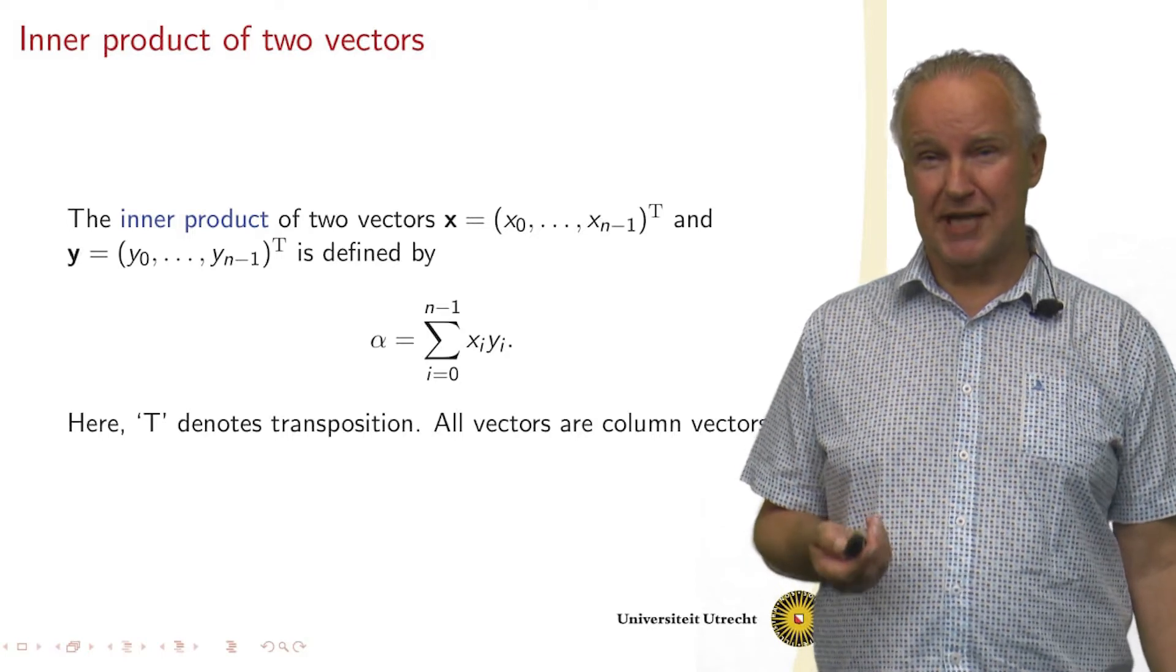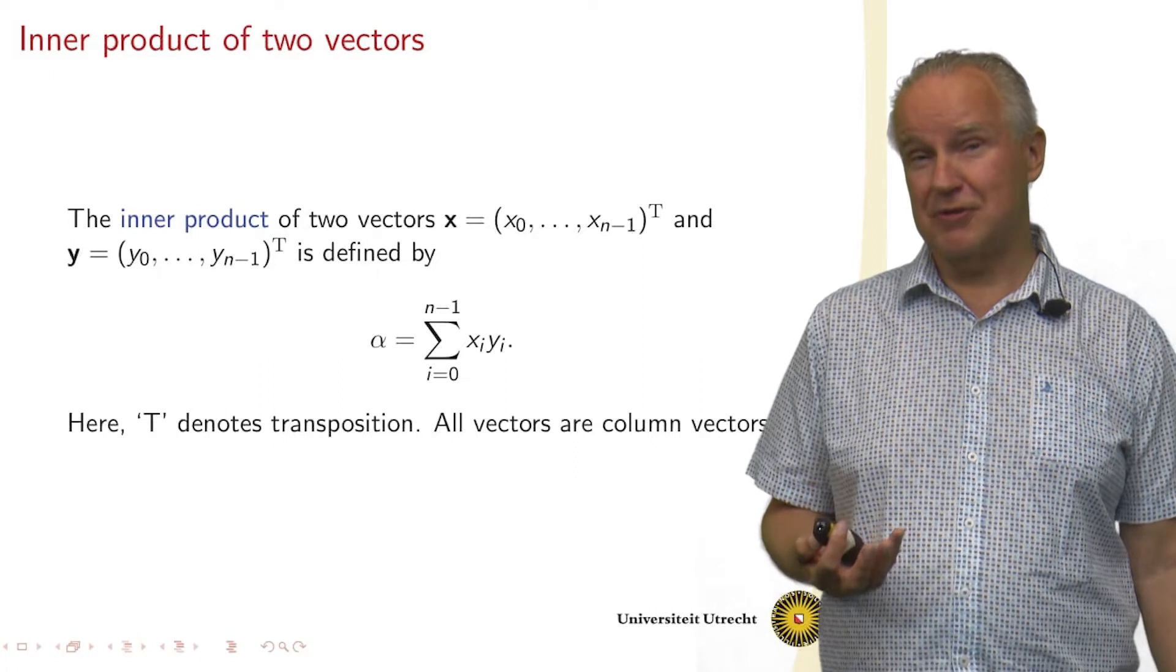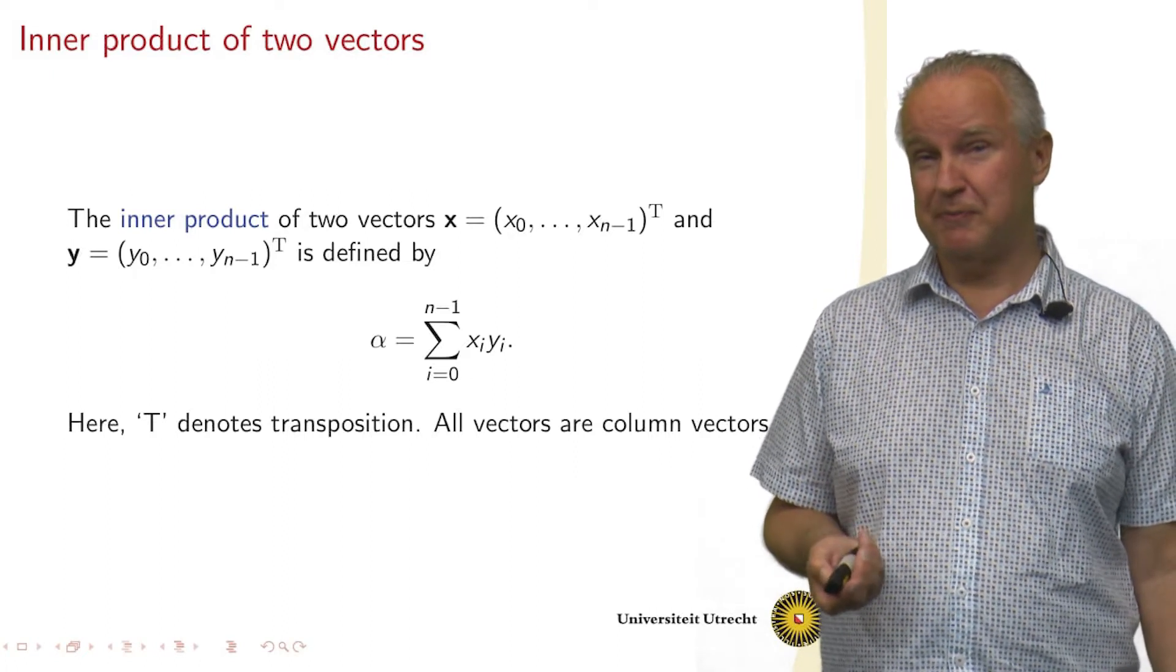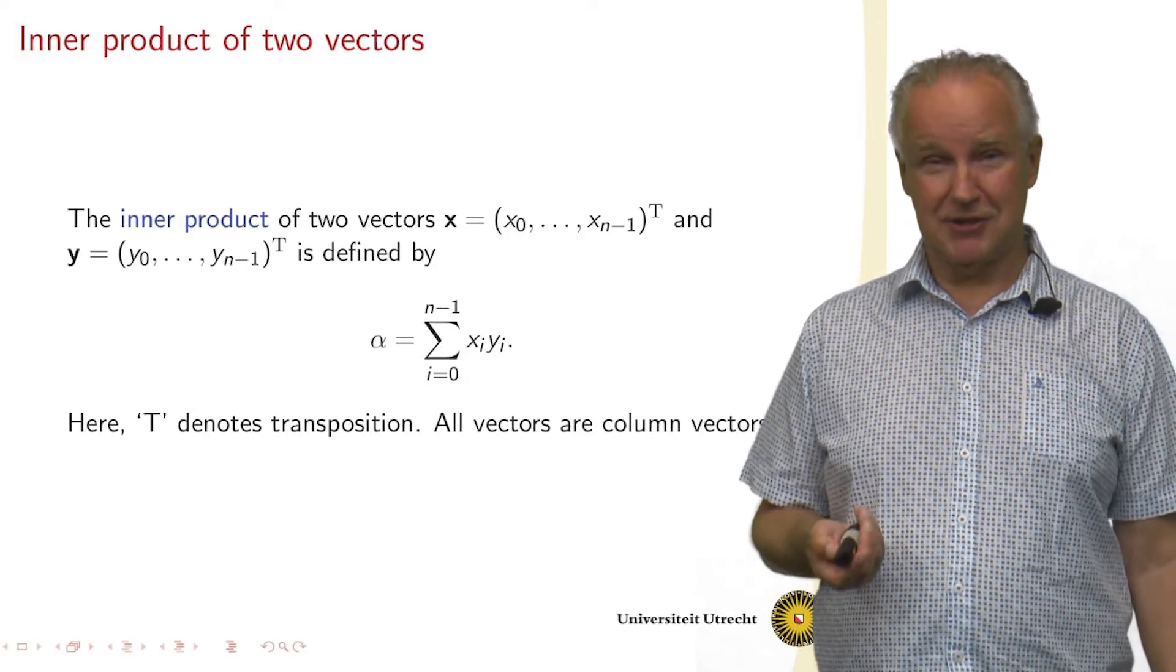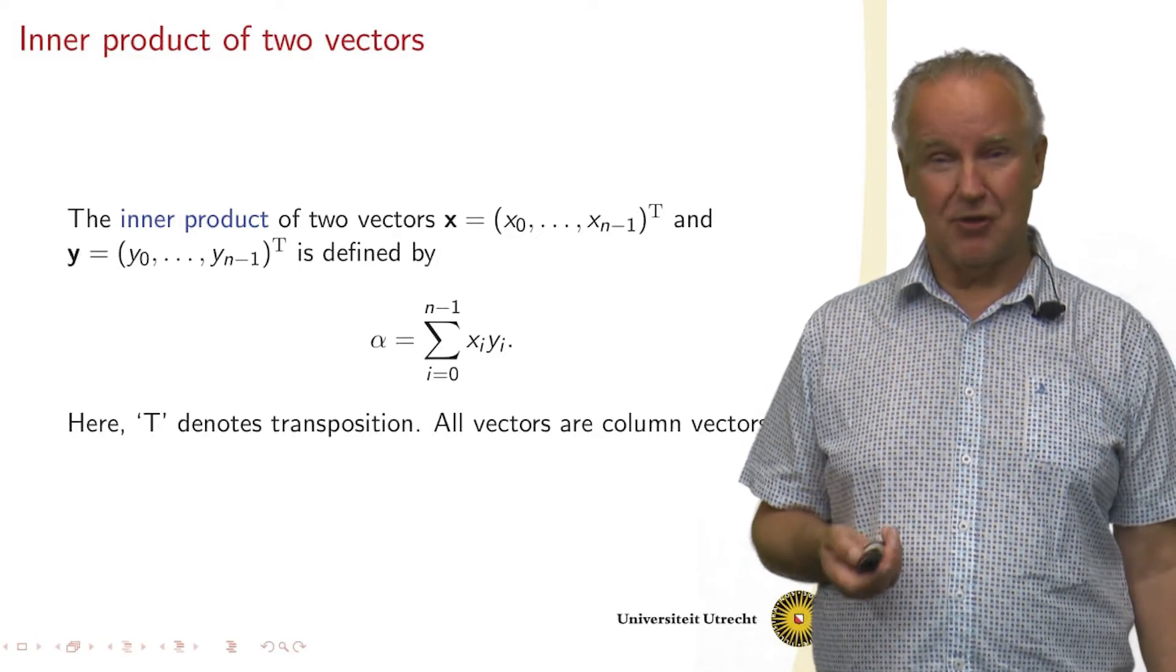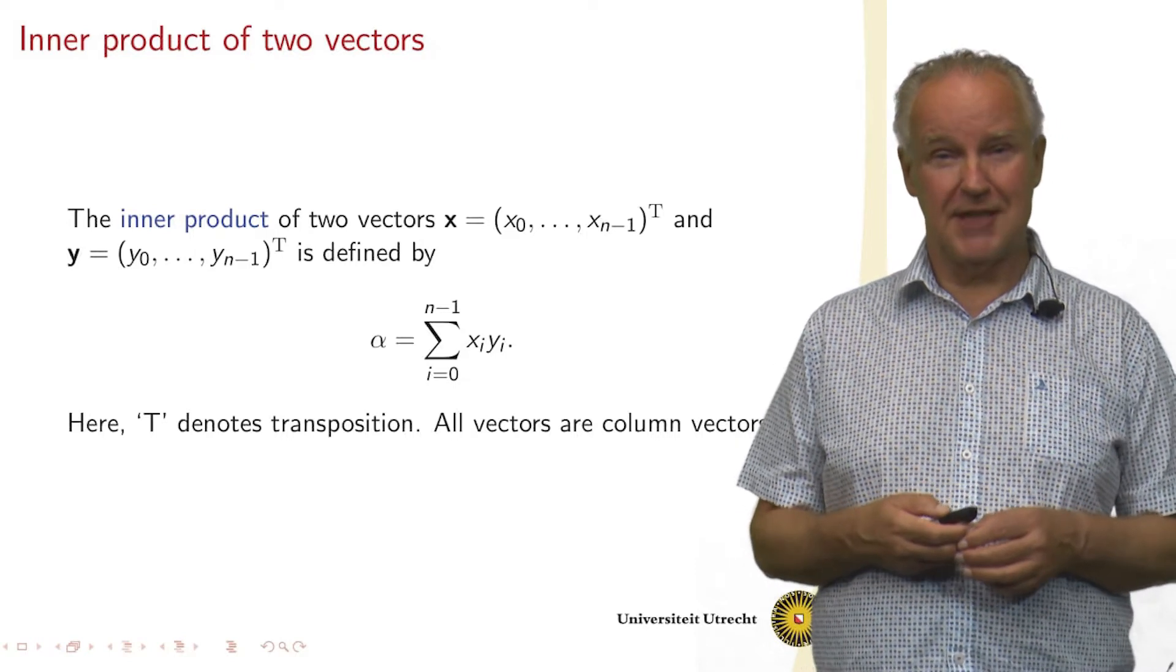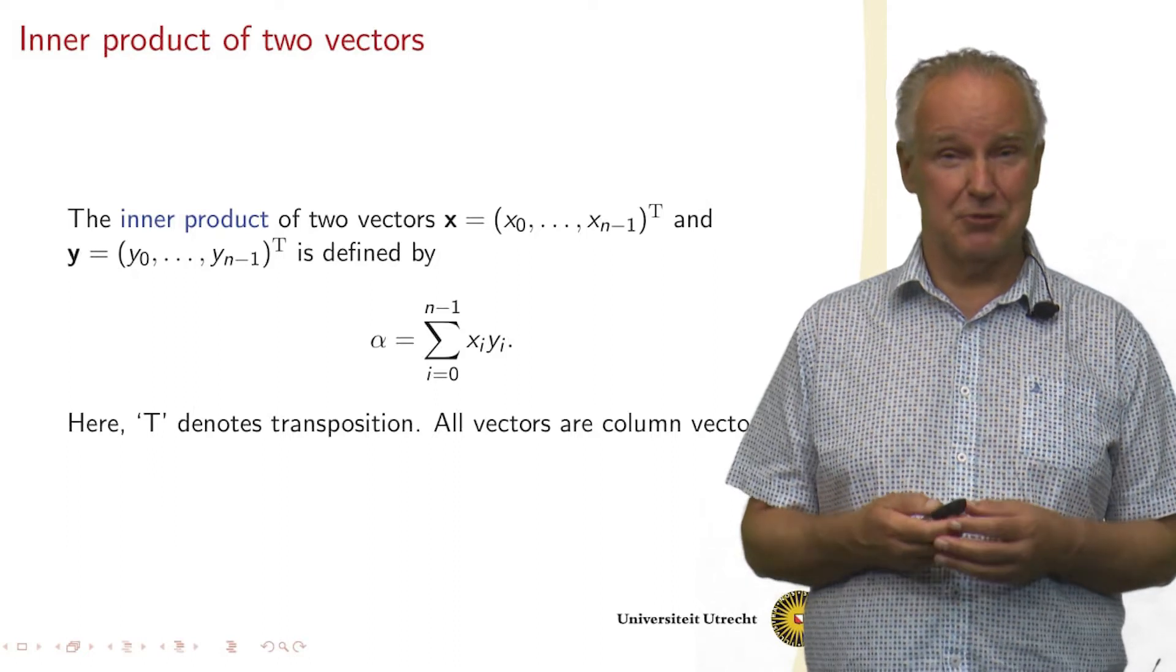So the first vector is x, the boldface x denotes a vector, and it has n components numbered from 0 to n minus 1. I write it as a row vector, but actually it's a column vector. All vectors are column vectors, and the superscript t means transposition, turning rows into columns and columns into rows.